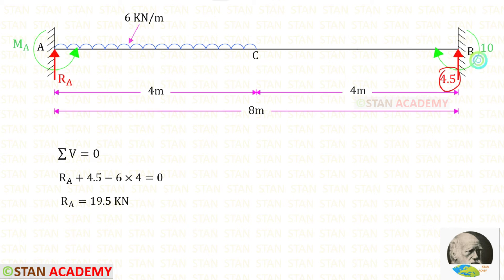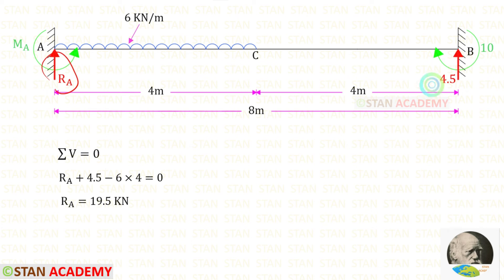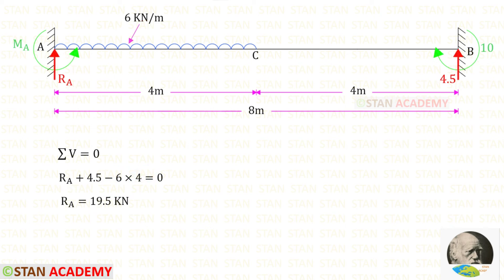We have found Rb and Mb. Now let us find Ra. Using the condition sigma V equals zero: Ra and Rb act upwards (positive), and the UDL acts downwards (negative). The UDL spans a distance of 4 meters. Finally, for Ra we get 19.5 kN.